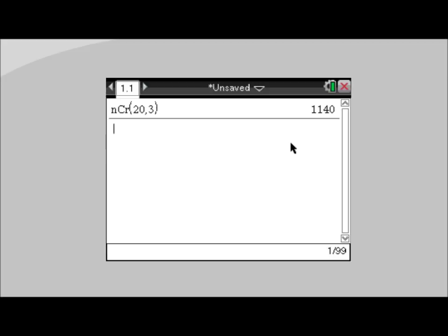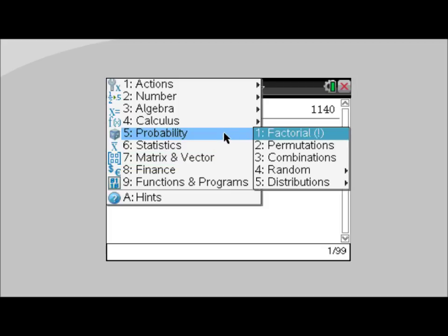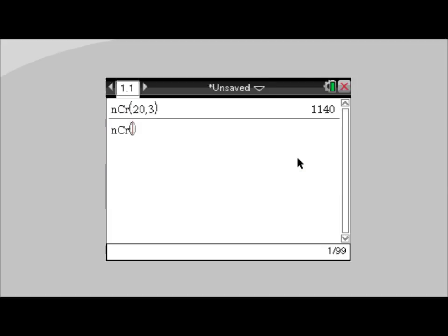To perform another computation, simply repeat those steps, going to menu, probability, and then combination. In the case of our example going to the amusement park, we had 10 in our group, we wanted to choose 3, so 10 choose 3, which equals 120.